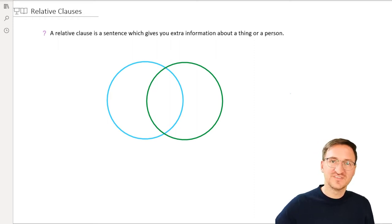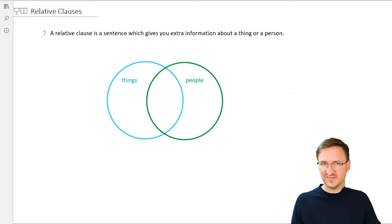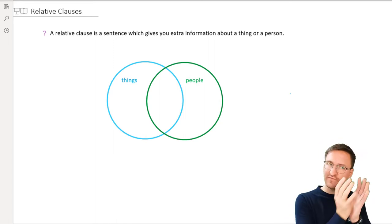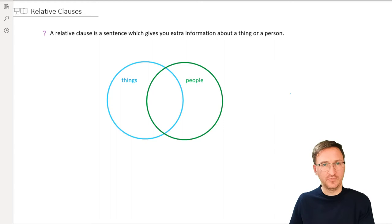Blue stands for the things that we may want to talk about. And if we have the things here, then of course we need to talk about persons or people on the other hand. And this is basically the only thing that English grammar makes a difference. We have things and we have people. That's the main difference that we have with the relative clauses.